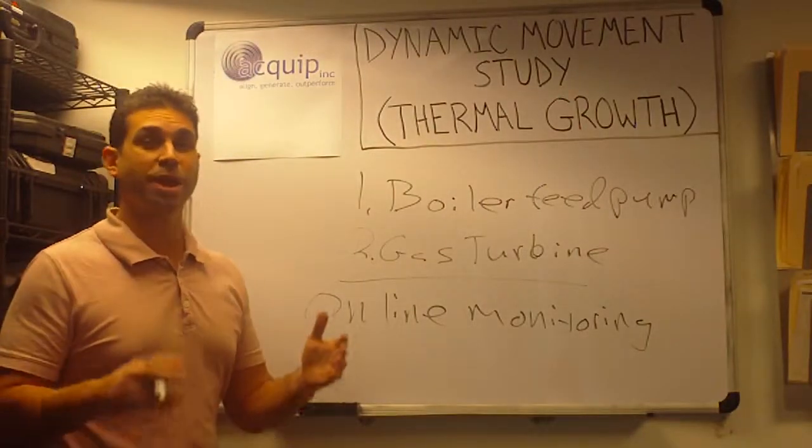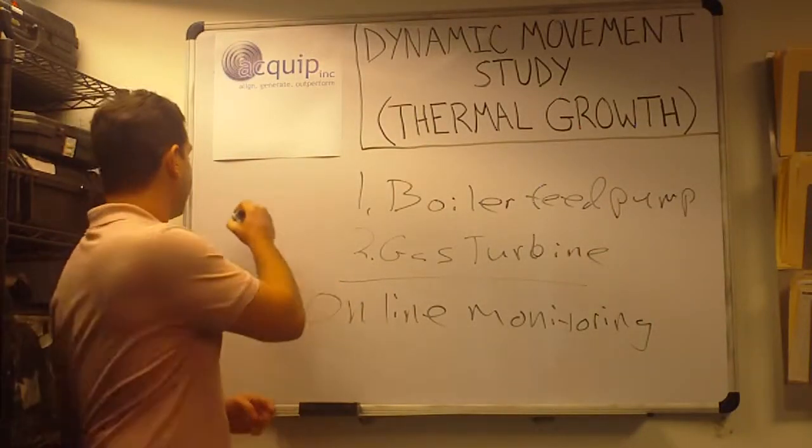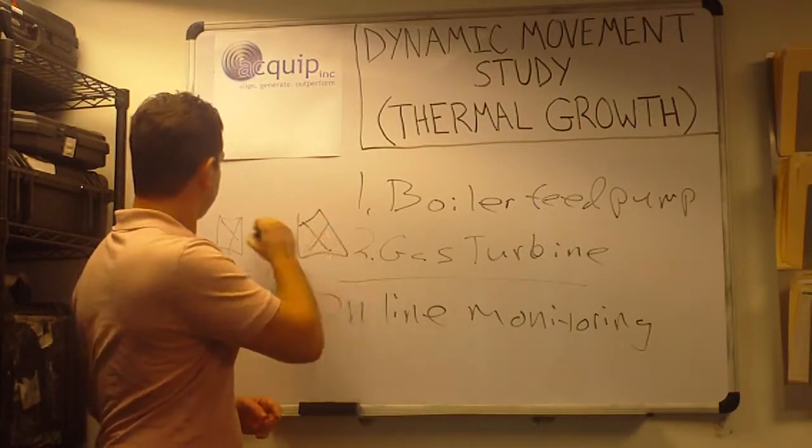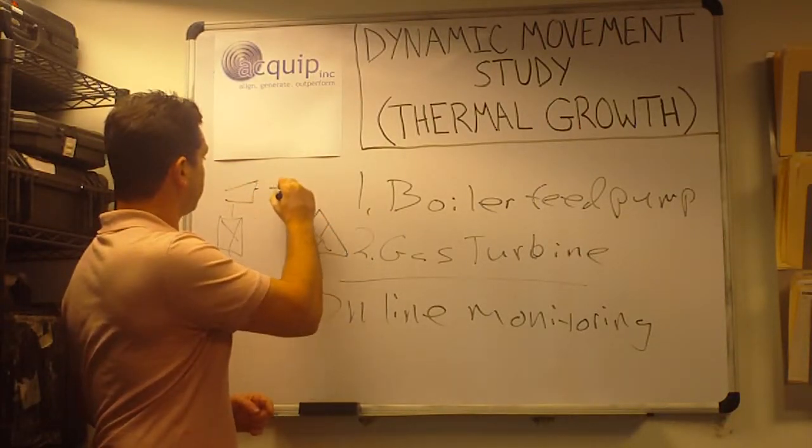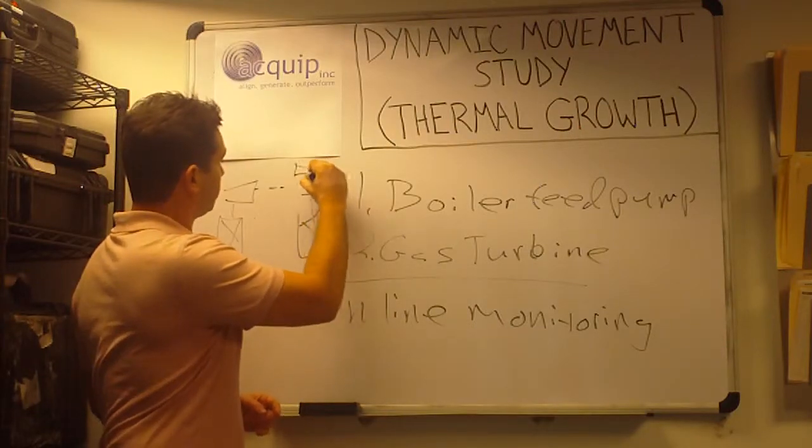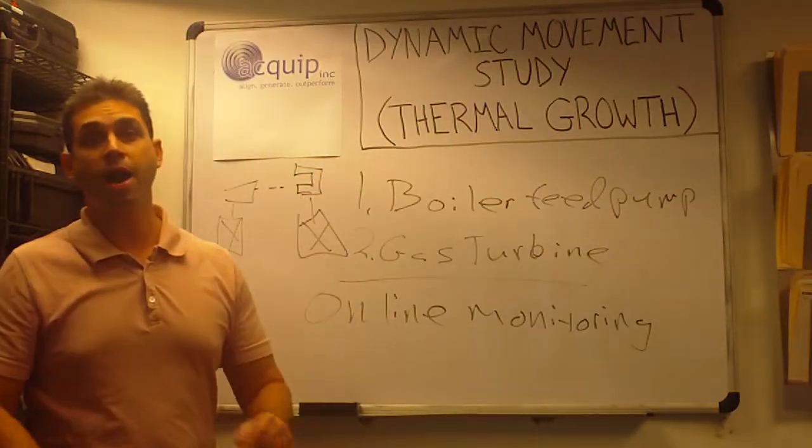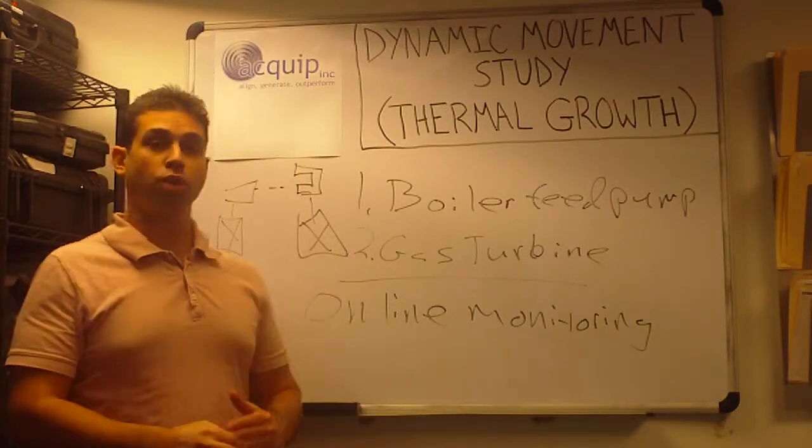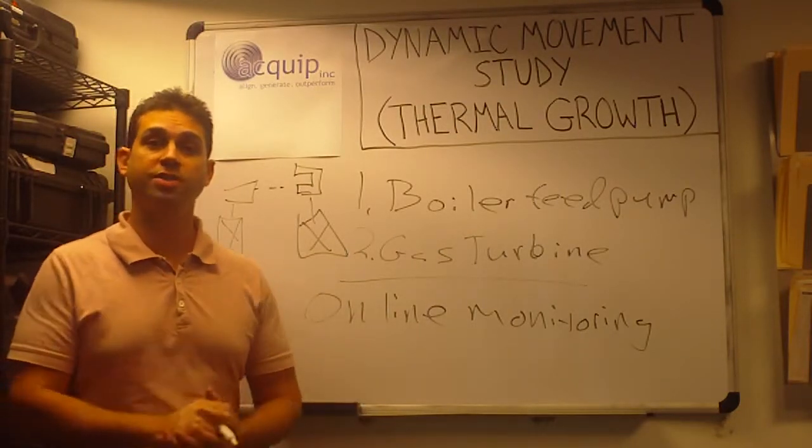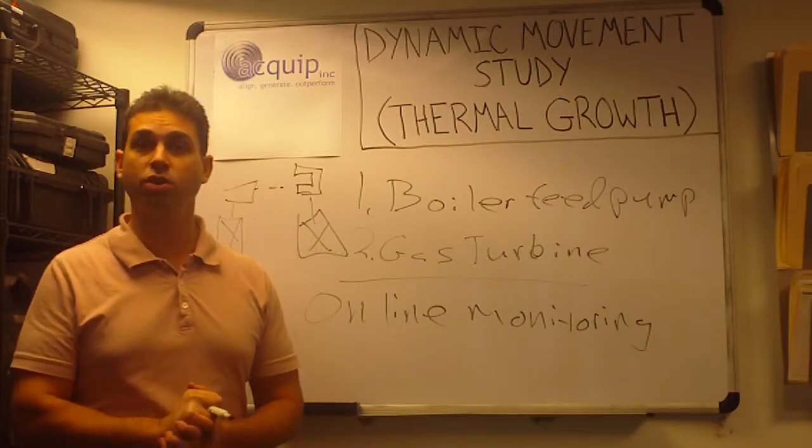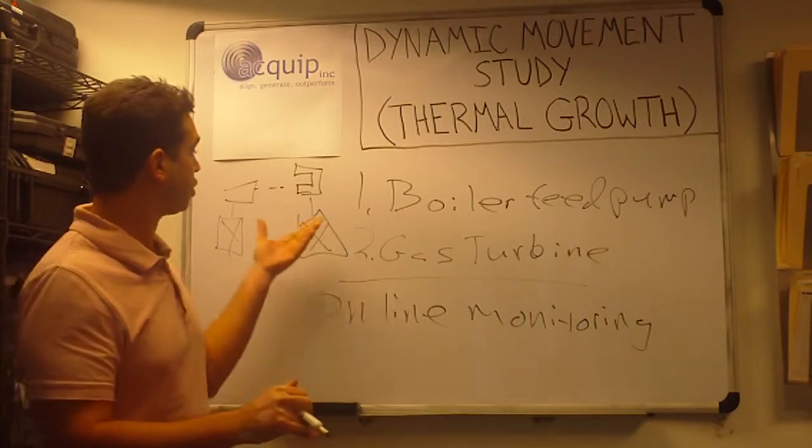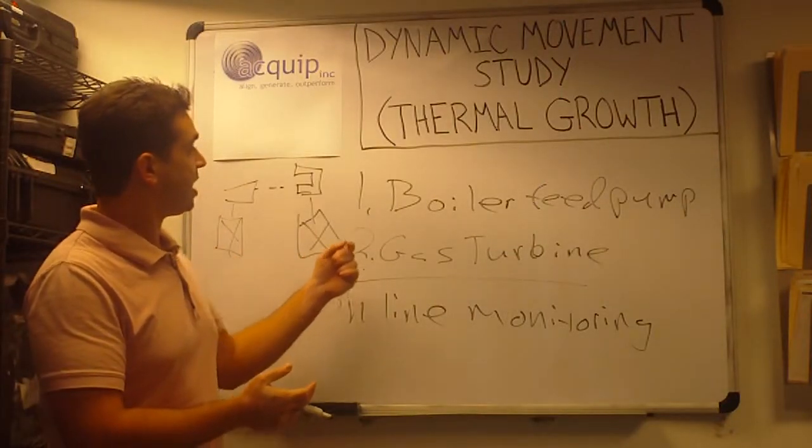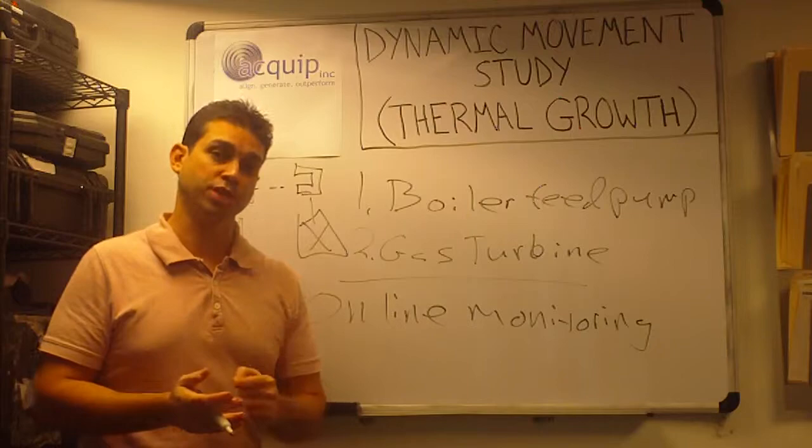The way that we do this is by actually hooking up a laser and a target to monitor the movement of your machine. By doing this, we're able to get the horizontal offset, horizontal angle, vertical offset, and vertical angle that happens across the coupling of your machine. We can do this at each one of the elements of your machine.